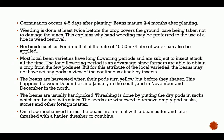Herbicides such as pendimethalin at the rate of 40 to 50 millilitres per 4 litres of water can also be applied. Most local bean varieties have long flowering periods and are subject to insect attack throughout. The long flowering period is an advantage since farmers can still obtain a crop from the few pods set. The beans are harvested when their pods turn yellow but before they shatter — between December and January in the south and November and December in the north. Threshing is done by putting the dry pods in sacks which are beaten with sticks, and the seeds are then winnowed to remove foreign materials.